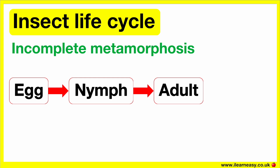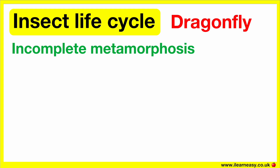The life cycle of a dragonfly is an example of incomplete metamorphosis. This is because the dragonfly in its early stages looks similar to its adult form, but it's much smaller and without wings. First, the female dragonfly lays eggs. The eggs are laid in or near water because they need water to survive. Eggs can also be directly inserted into stalks of plants.